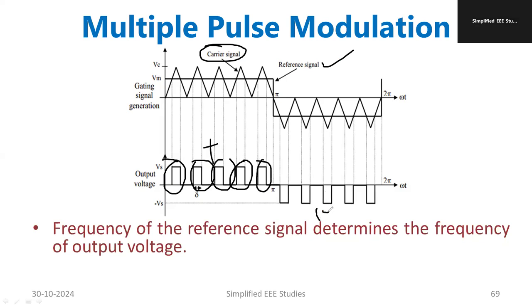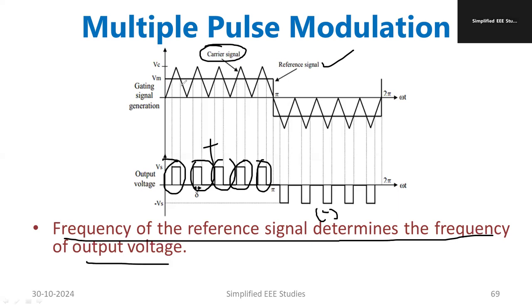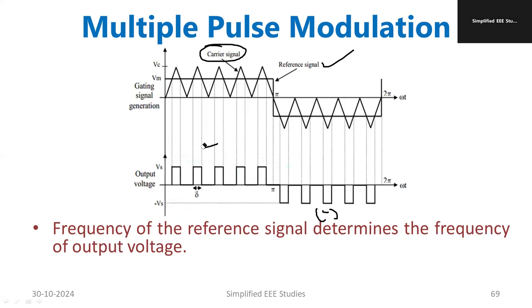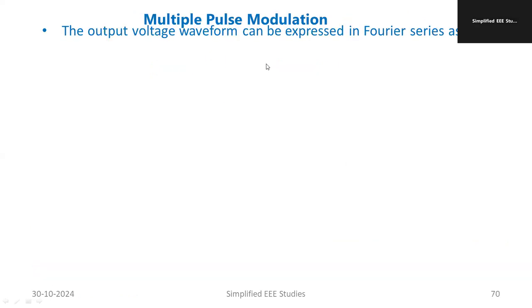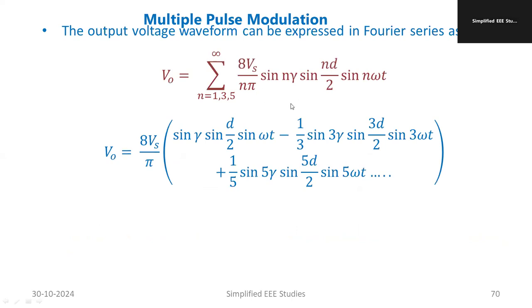This is the basic diagram so that you can understand the concept clearly. Instead of a single pulse, we use multiple pulses. The ratio of AR to AC is known as the modulation index — AR is the amplitude of the reference signal and AC is the amplitude of the carrier signal. If you take this ratio, you get the modulation index.